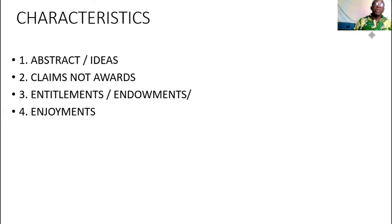From this approach, we can look at the characteristics of human rights. Number one, they are abstract ideas. Number two, they are claims that people make — they are not awards, because they cannot be given by any authority on earth, neither by biological parents. Number three, they are entitlements and endowments. Number four, what remains is to enjoy them.